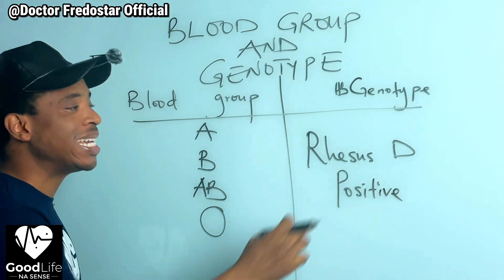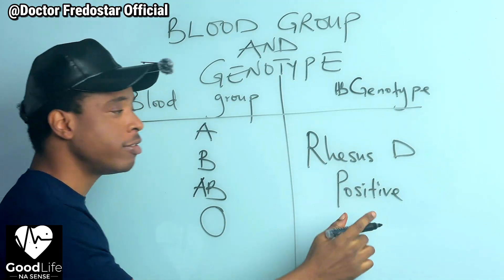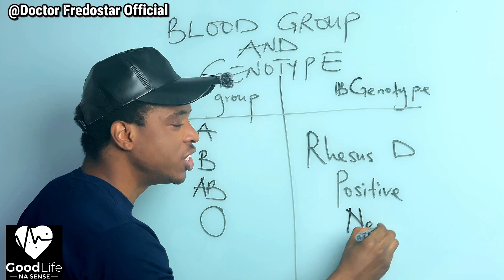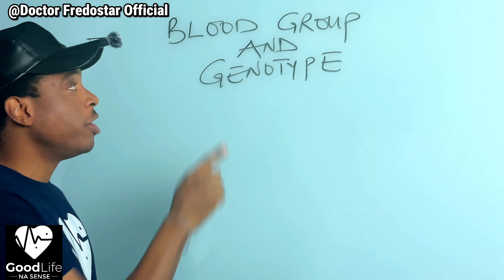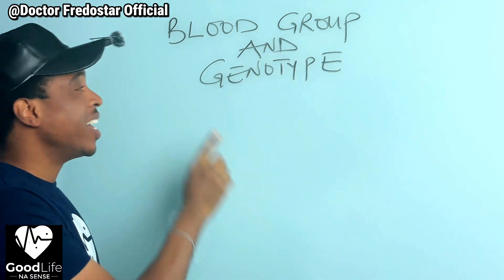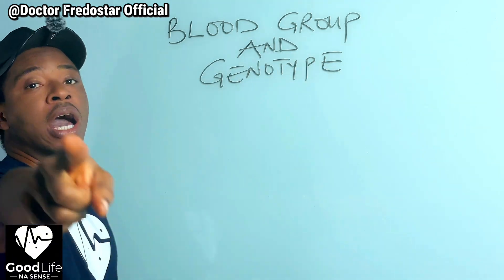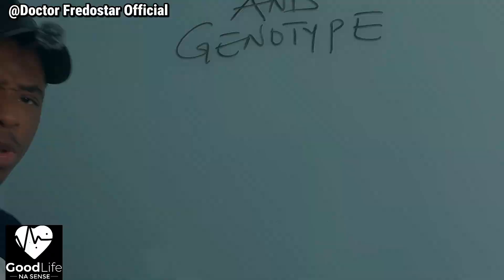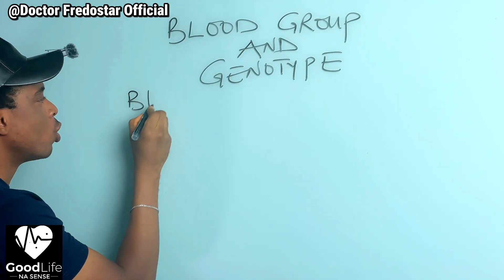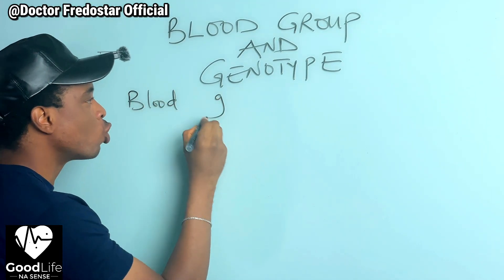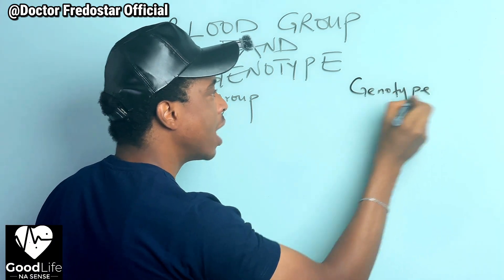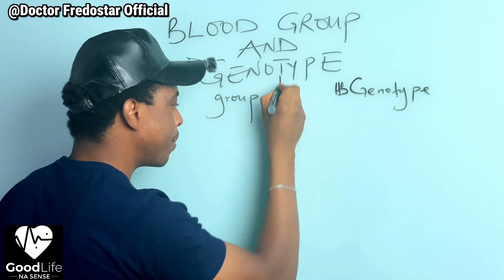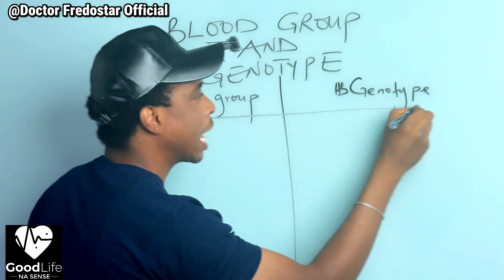Every human being is either Rhesus D positive or Rhesus D negative. What is your genotype? After this video, if you don't know your blood group or your genotype, I will visit you in your dream. People ask: what is blood group, what is genotype? So today I want to teach you your blood group and your genotype.